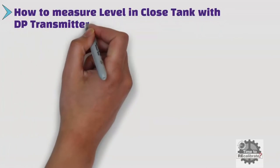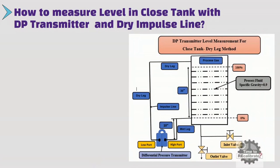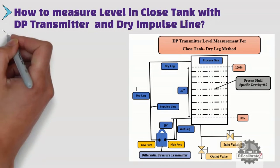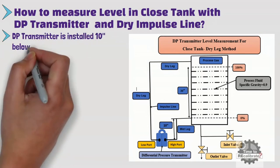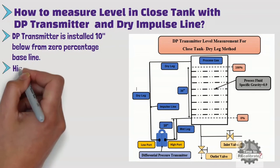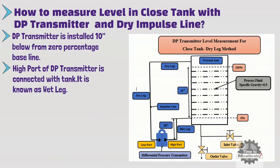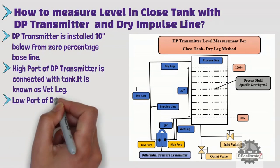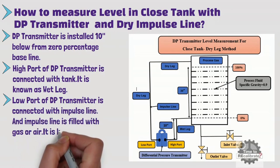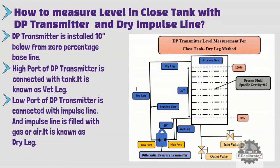How to measure level in a closed tank with a differential pressure transmitter and dry impulse line? This method is also known as the dry leg method. As you can see from the picture, the DP transmitter is installed 10 inches below the 0% baseline. The high port side is connected with the tank, and the process fluid puts pressure on the high side — this is the wet leg. The low port side is connected with an impulse line filled with gas or air, known as the dry leg. Since the impulse line is filled with gas, it does not put any pressure on the low port, so the low port has 0 inches H2O pressure.